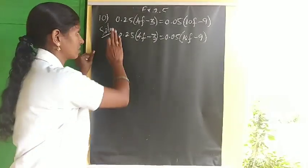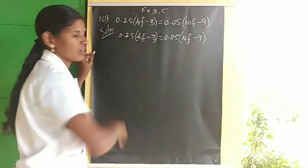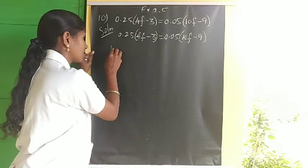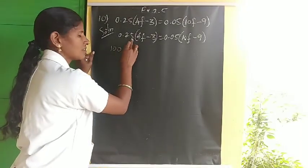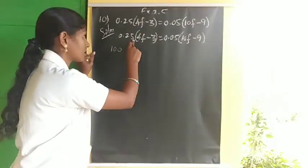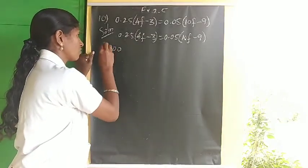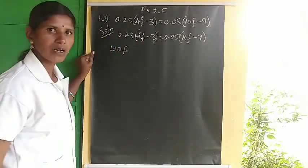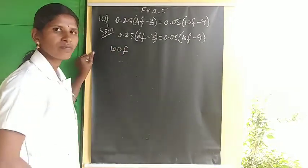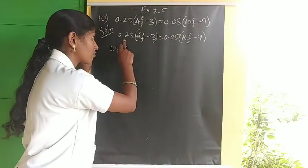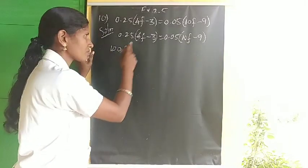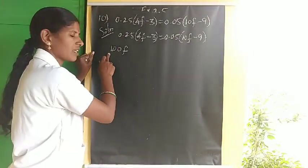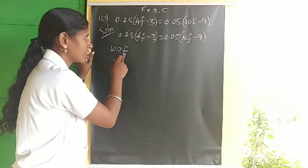After multiplying 4 times 25 to get 100, count 2 digits from the right to place the decimal point — the answer is 1. So 0.25 times 4F gives 1F. Next: 3 times 25 gives 75, and placing the decimal 2 digits from the right gives 0.75. So the left side becomes 1F minus 0.75.